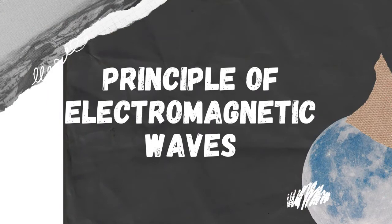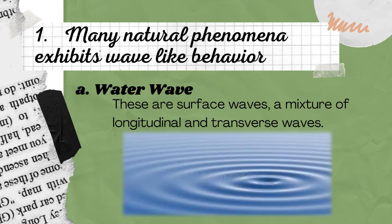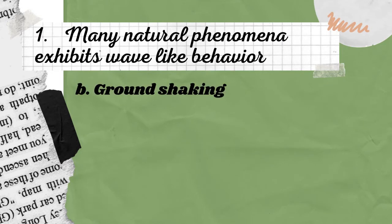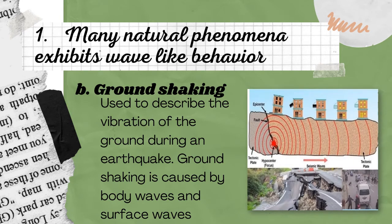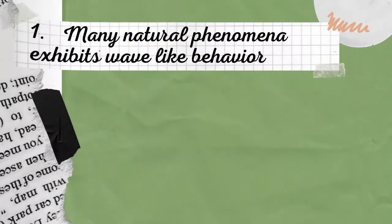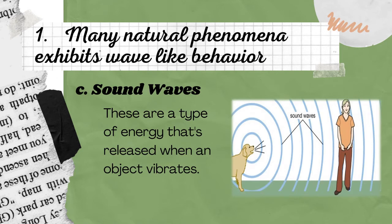Principles of electromagnetic waves. Many natural phenomena exhibit wave-like behavior. First is water waves — water waves are surface waves, a mixture of longitudinal and transverse waves. Ground shaking is used to describe the vibration of the ground during an earthquake and is caused by body waves and surface waves. Sound waves are a type of energy released when an object vibrates; those acoustic waves travel from their source through a medium like air or water, and when they come into contact with our eardrums, our brains translate the pressure waves into words, music, or signals we can understand.